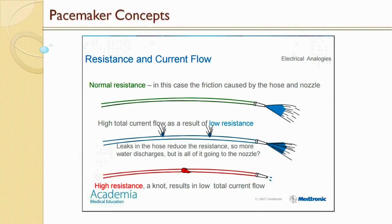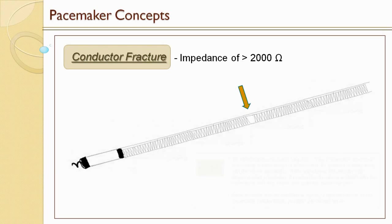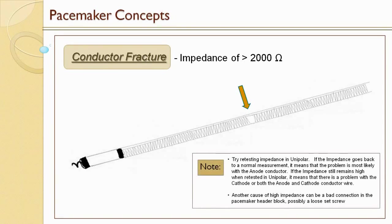Now let's turn our attention to the bottom hose. The bottom hose has a knot tied in it, representing high resistance resulting in low current flow. This is very similar to a conductor fracture — the problem is on the inside with the conductors. You can see a definite break in the conductors going down to the tip. When we have a conductor failure, we'll typically have an impedance of greater than 2000 ohms. If you get an impedance of greater than 2000, try retesting the impedance in unipolar. If the impedance goes back to a normal measurement, it means the problem is most likely with the anode conductor.